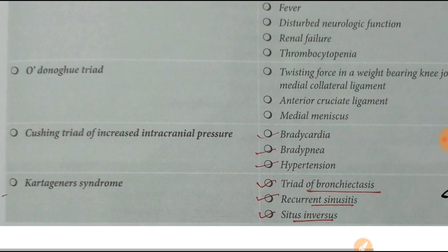Next one is O'Donoghue's triad: a twisting force on the weight-bearing knee joint causes injury to the medial collateral ligament, anterior cruciate ligament, and medial meniscus — that is O'Donoghue's triad.